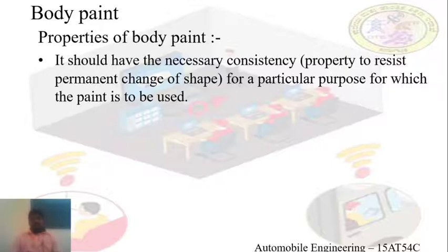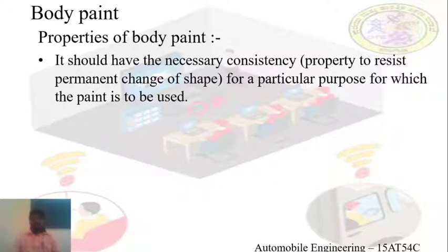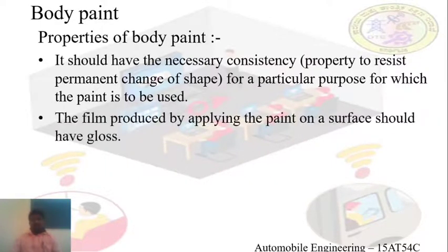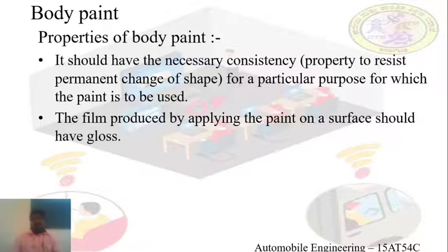Another property of the paint is it should have a necessary consistency. For different purposes there should be a different consistency, so consistency is also one of the properties of the body paint. The film produced by applying the paint on a surface should have a glossy finish. In any kind of vehicle, if the paint gives a glossy film then the appearance will increase. This is also one of the properties of body paint.